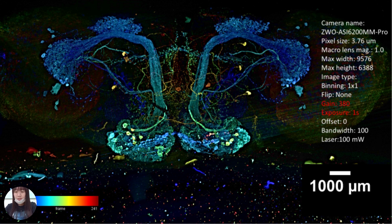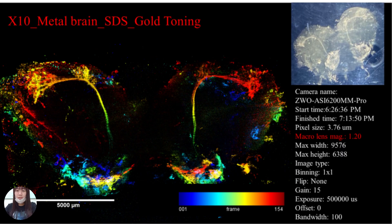Consequently, the research team is currently in the process of developing metallic-stained samples with the aim of mitigating the aforementioned challenges. This is our latest test method. While it addresses the issue of photobleaching, it results in sample overexposure and an inability to filter impurities in some areas. Therefore, it is still under refinement.